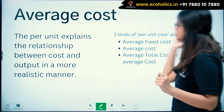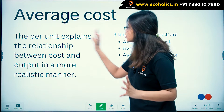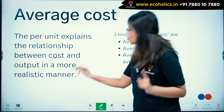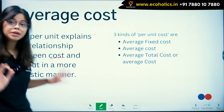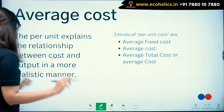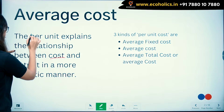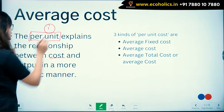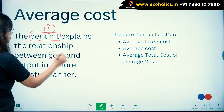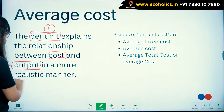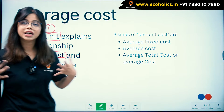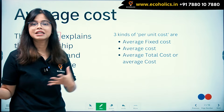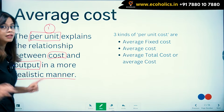First thing: average cost. Average cost, or per unit cost, explains the relationship between cost and output in a more realistic manner. The key terms here are 'per unit' — that is the first keyword — and 'relationship between cost and output' in a more realistic, real-world application manner.